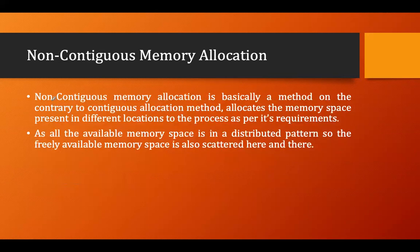In non-contiguous memory allocation — which is the contradictory of contiguous — memory space present in different locations is allocated to the process as required. All available memory space is in a distributed manner, so freely available space is scattered here and there.